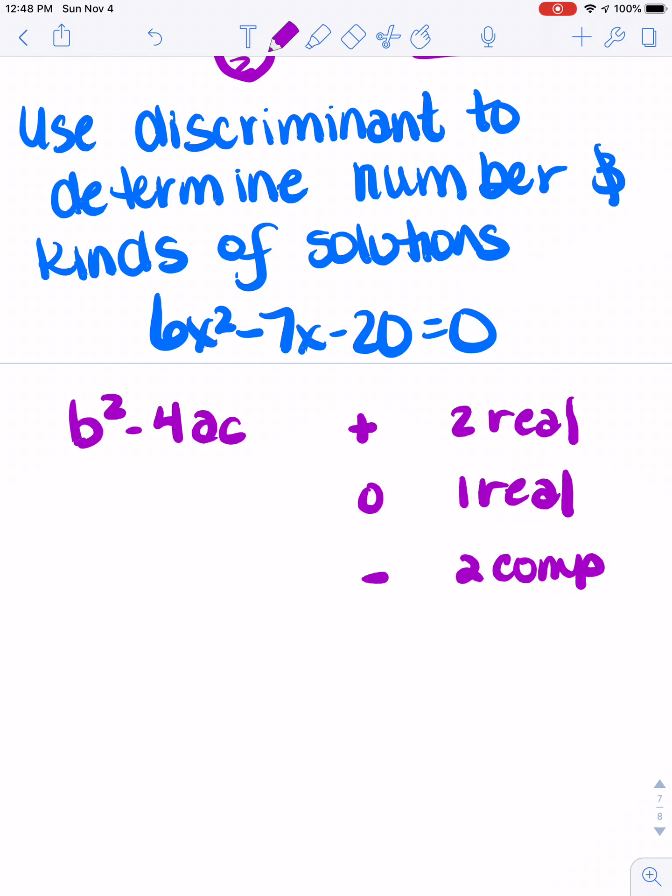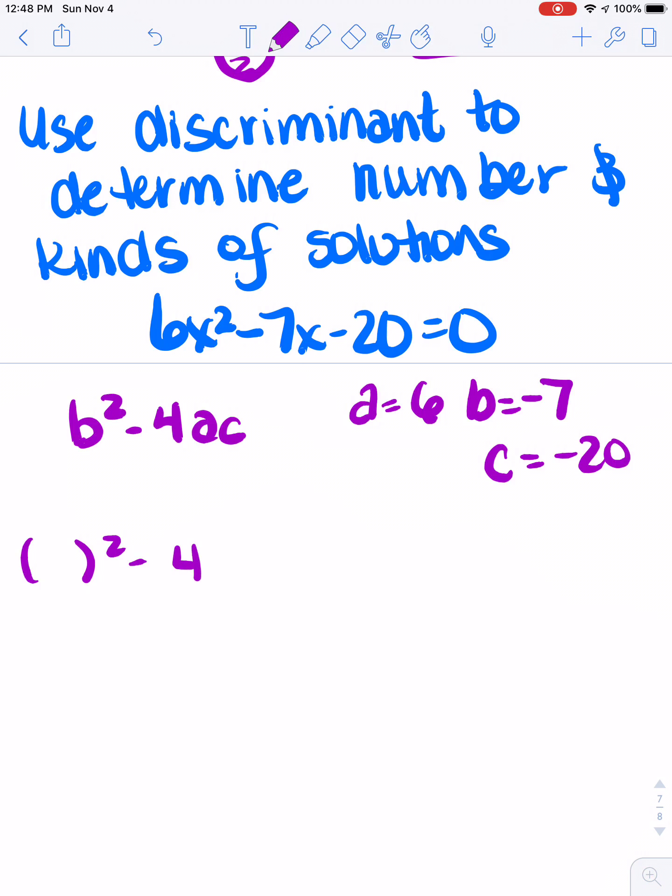So our job is to figure out in this case what that's going to be. So in this problem, a = 6, b = -7, and c = -20. So I'm going to plug this in. So -7, 6, and -20. And this gets just basically put in our calculator. So if I have (-7)² - 4(6)(-20), I end up with 529.